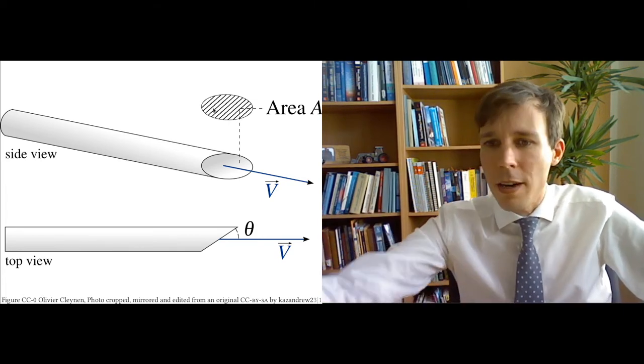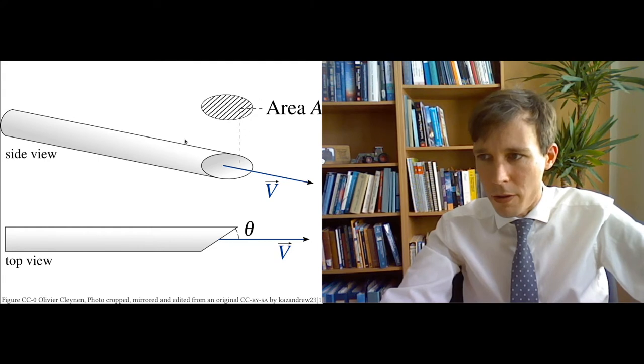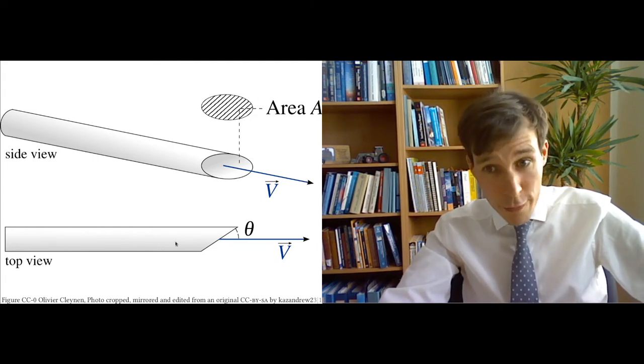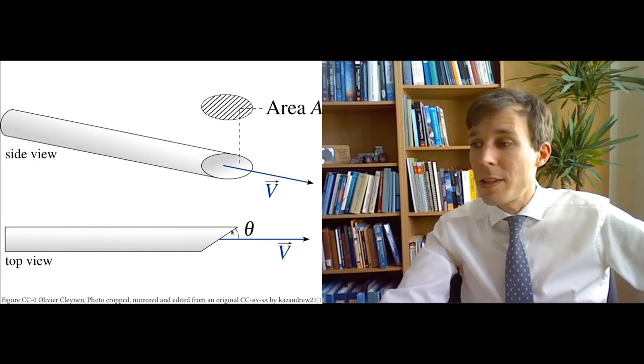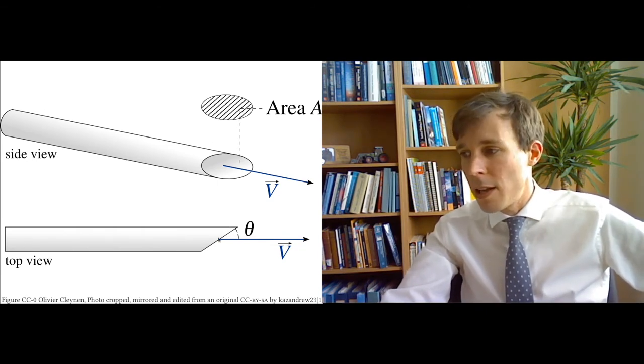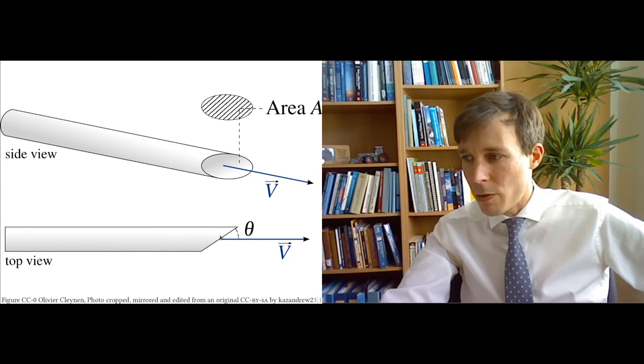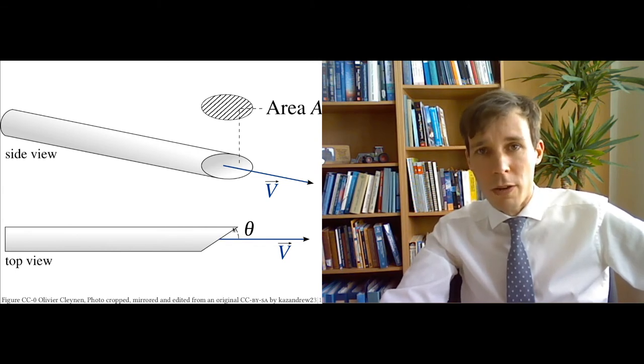And so if you see this diagram here on the top, you see it here from the seam from the top, from above. Then you will see there's an angle, an angle theta between the velocity V and the cross section area, which here we cannot represent.